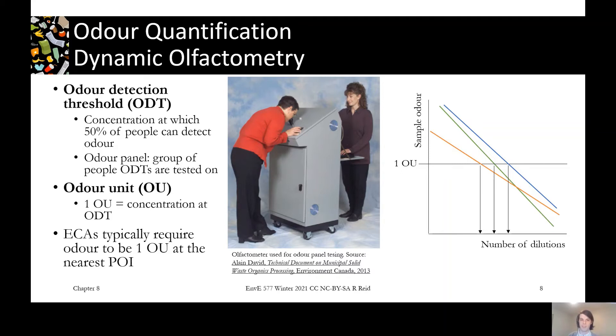Now, how dynamic olfactometry works is you assemble a panel of people who are all pre-screened to be about average smellers. You'll expose them to different concentrations of samples taken on site. On site, you'll go with a sampling pump and a sample bag and actually just pump air into a bag and bring it back to the lab.